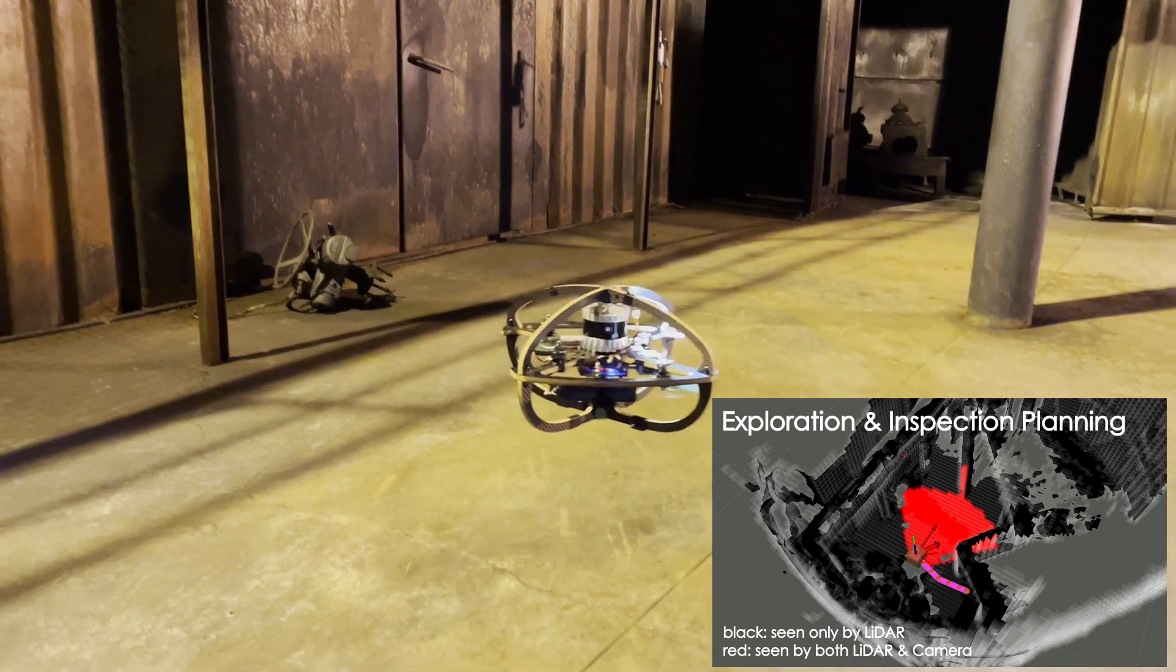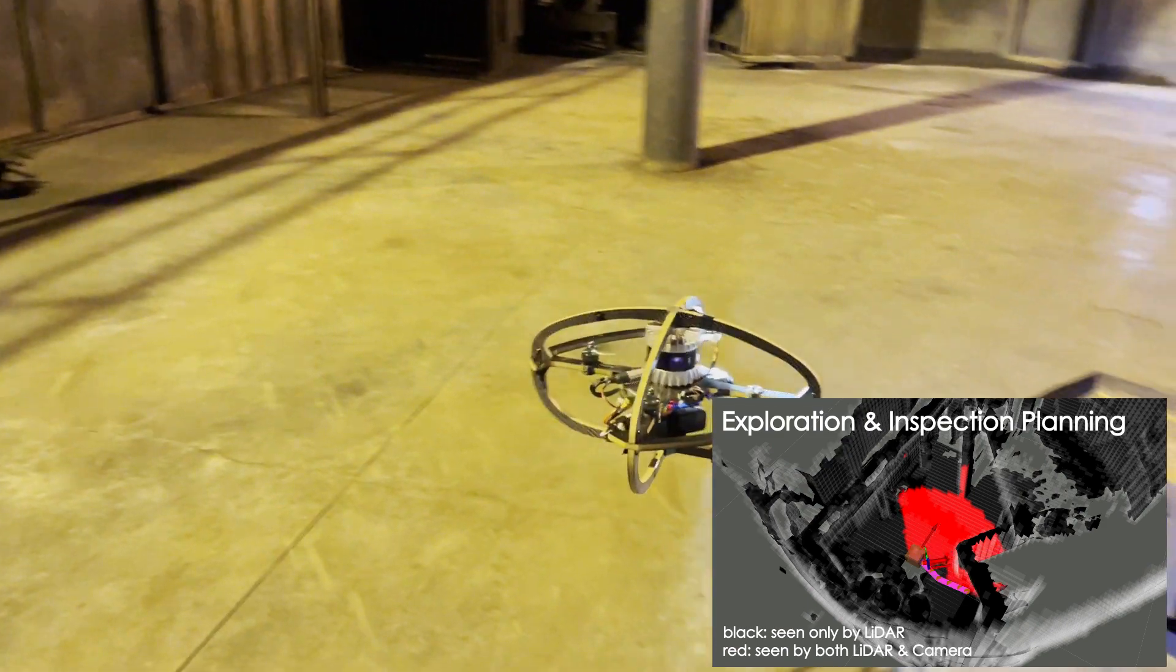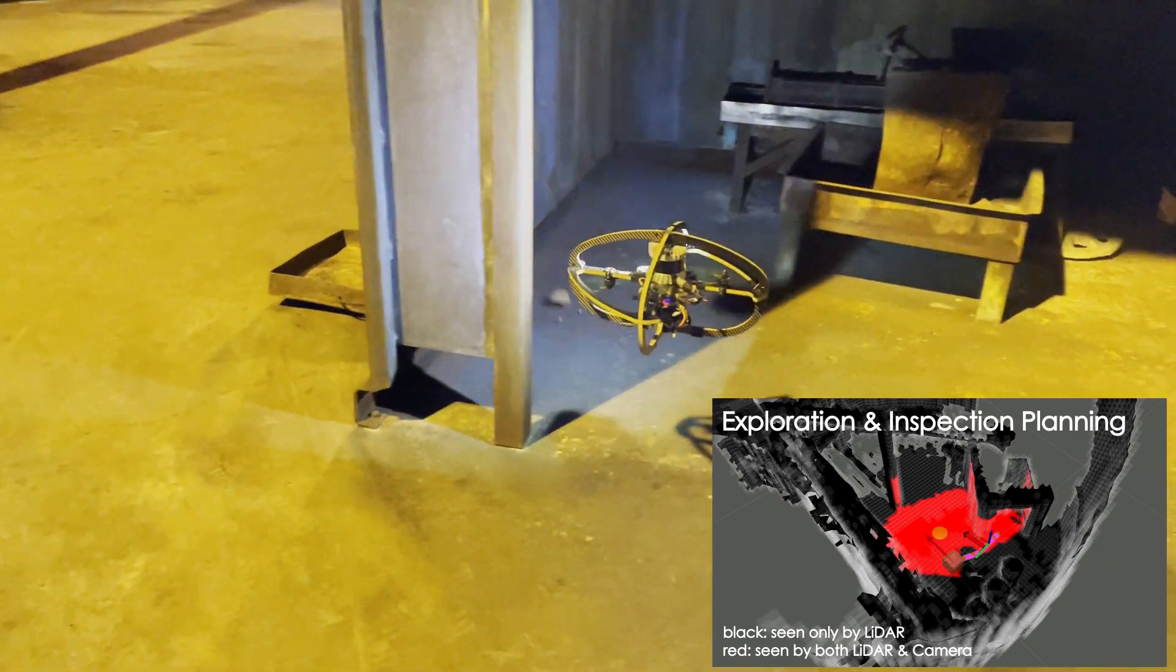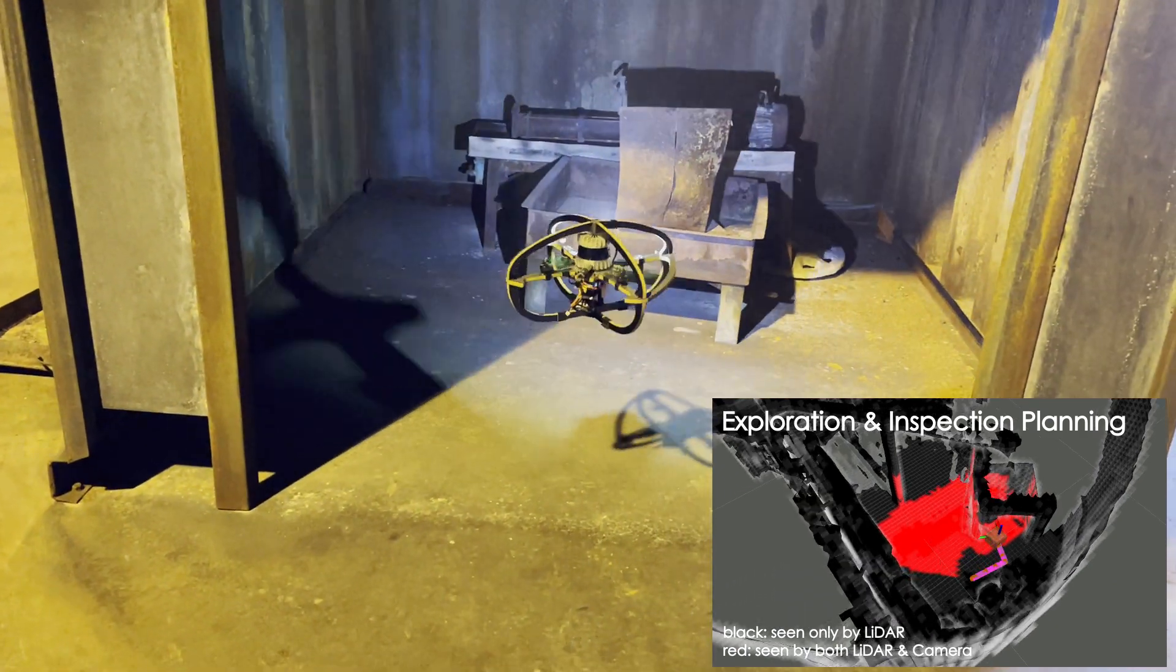In this experiment, we demonstrate a combined exploration and inspection mission using the RMFL collision-tolerant aerial robot inside the NewTek facilities in Trondheim, Norway.